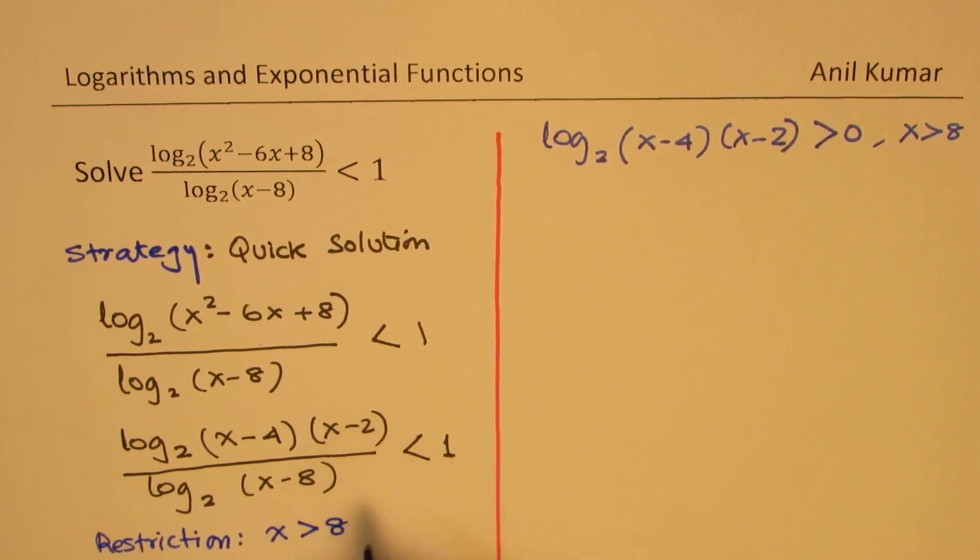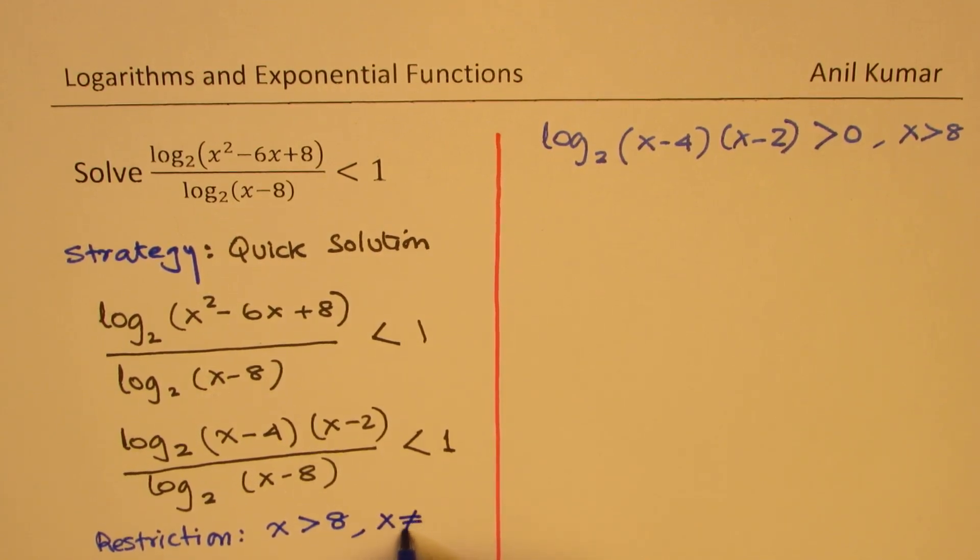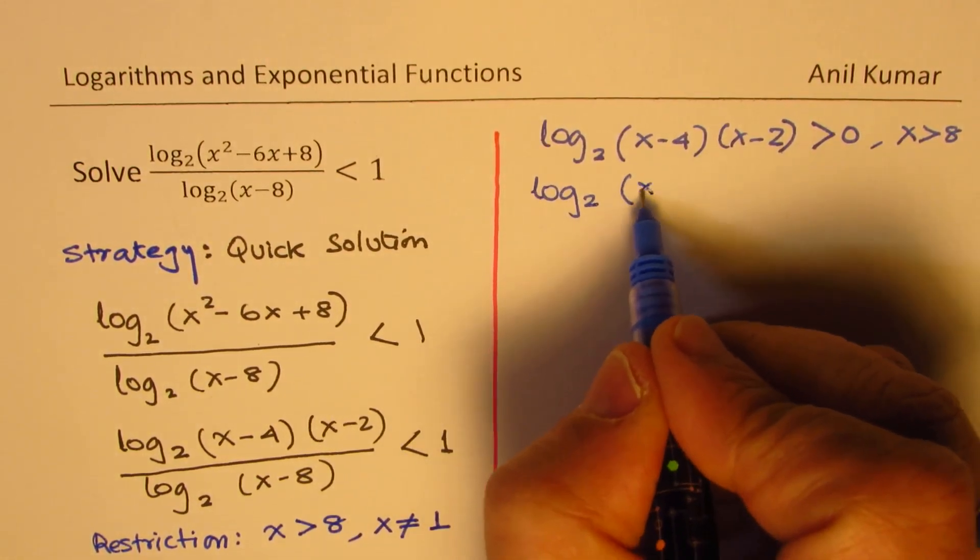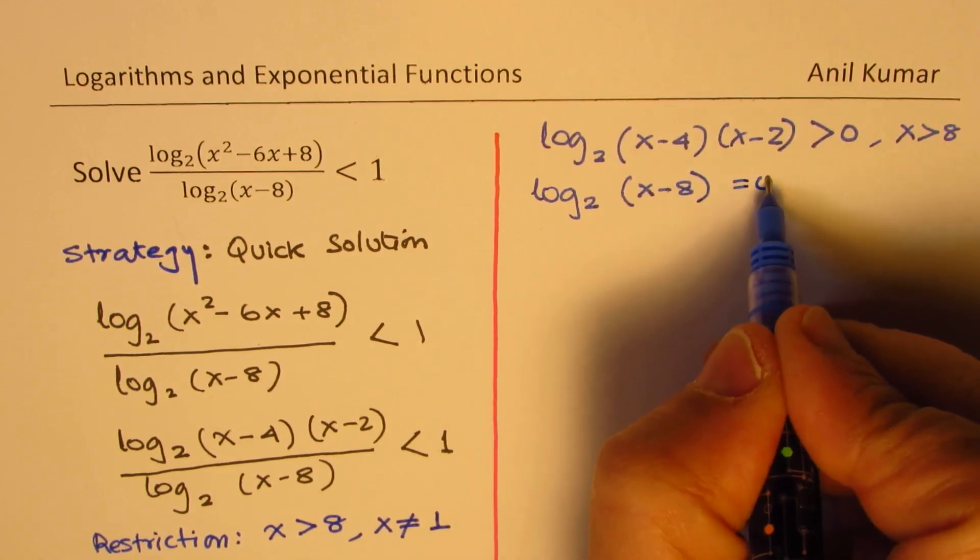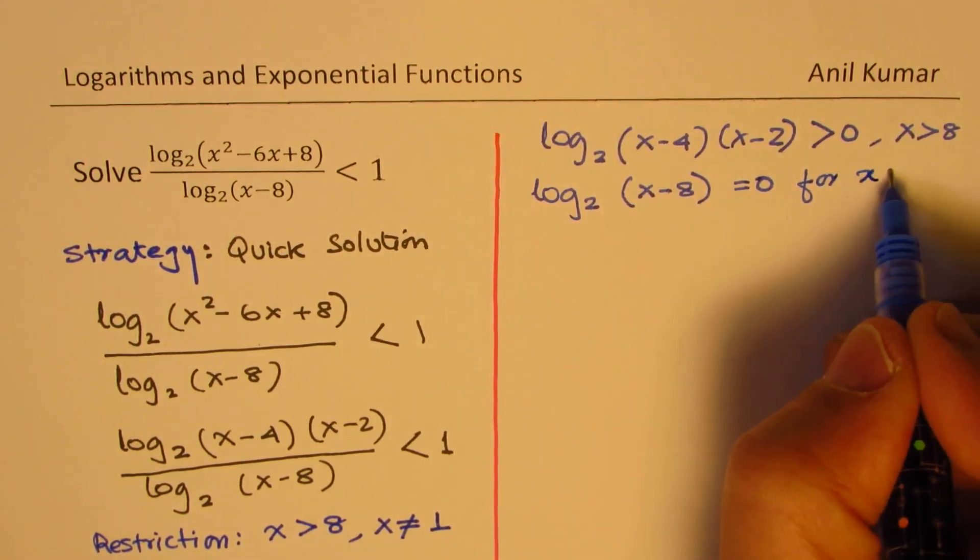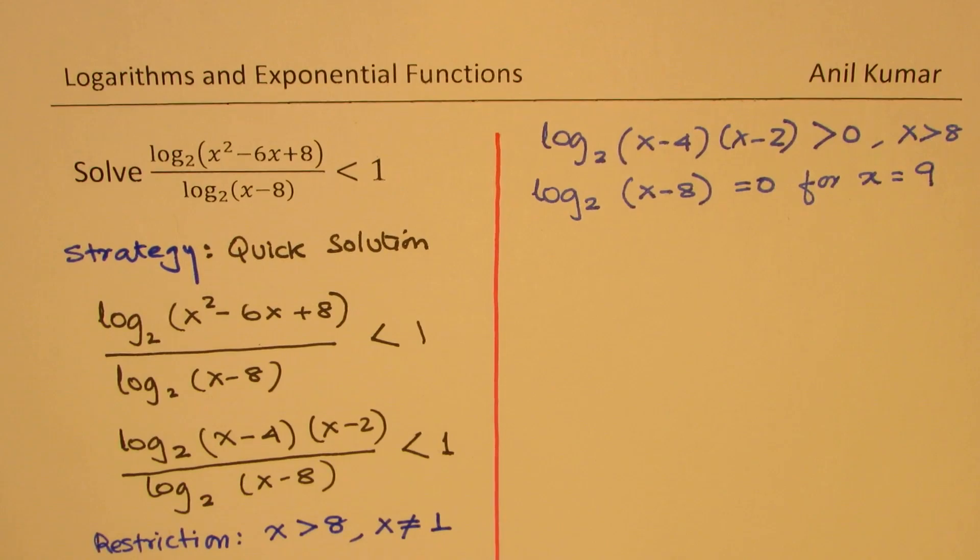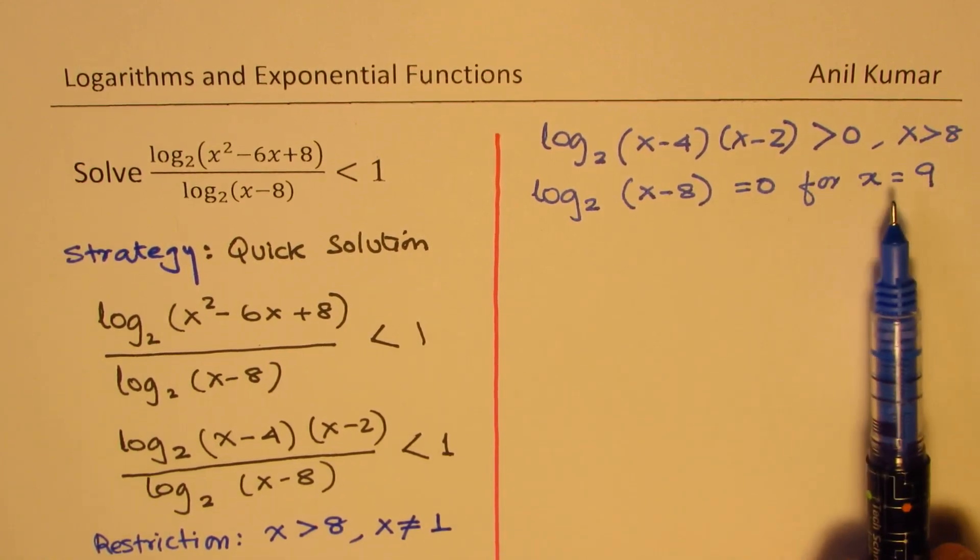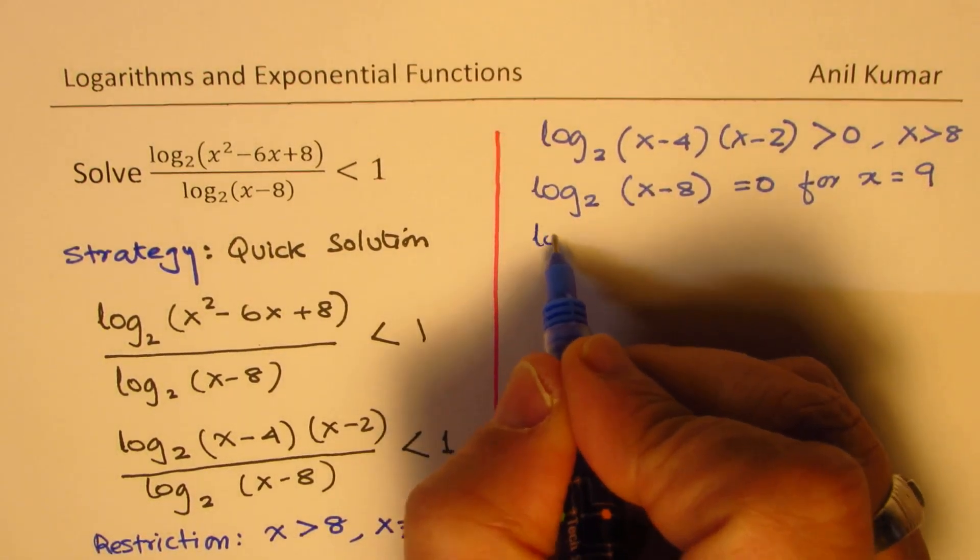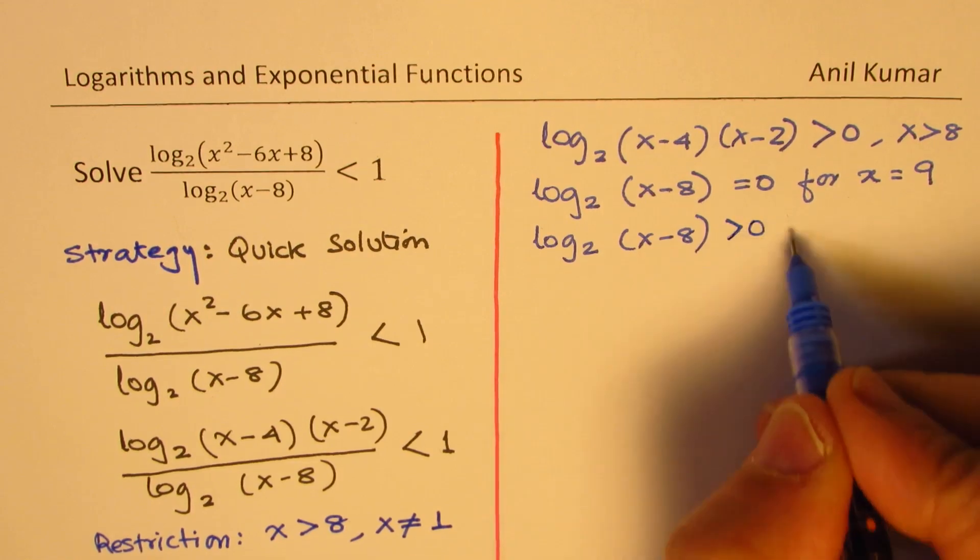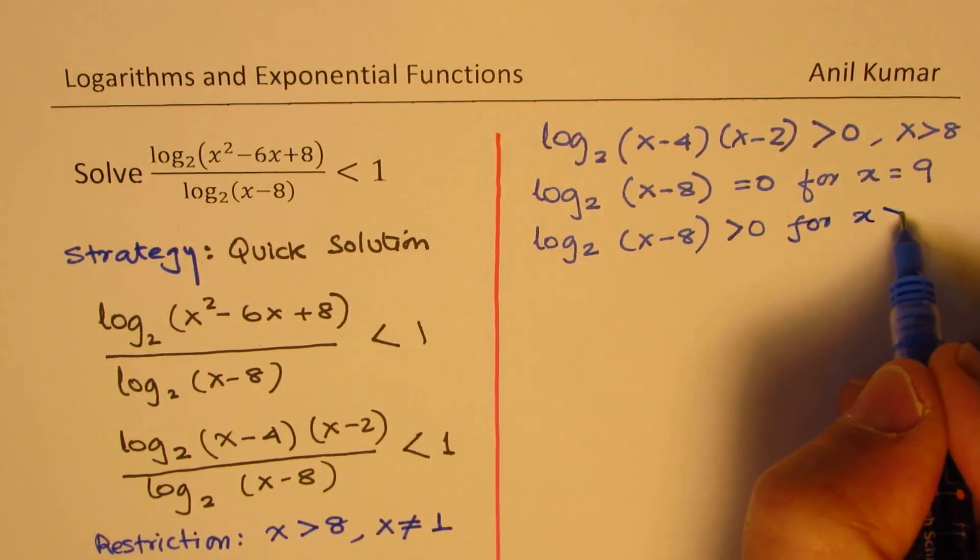So that means we have another restriction here that x is not equal to 9, since what you notice here is that log base 2 of (x - 8) will be equal to 0 for x equals to 9. And denominator cannot be 0. So clearly, we know that this part, log base 2 of (x - 8), is greater than 0 for x greater than 9.